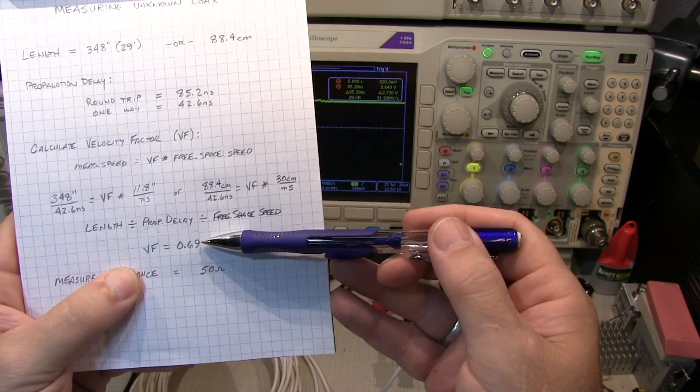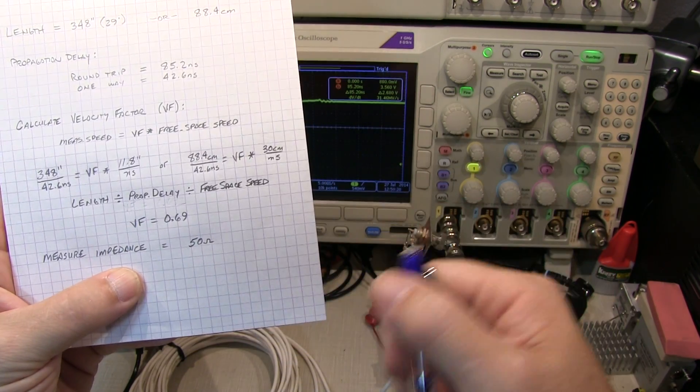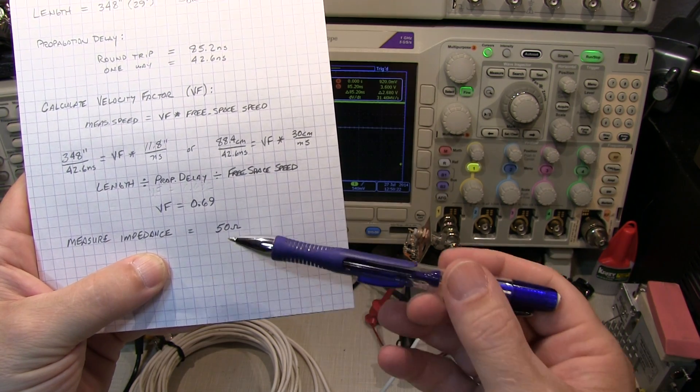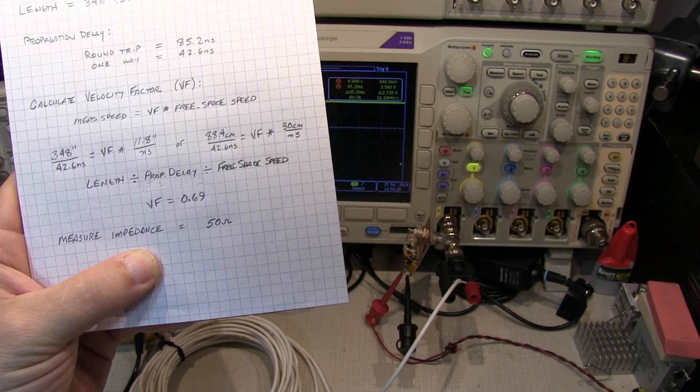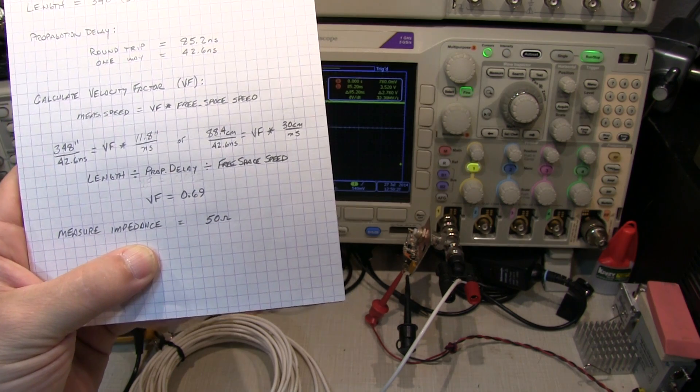So now we know the length, we know the velocity factor. Now we just want to measure the output impedance. And I'm assuming it's going to be 50 ohms, but it might not be. So let's go take a look at one way to measure that.